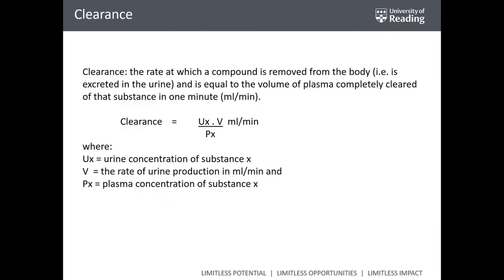Clearance is the rate at which a compound is removed from the body — for example, excreted in the urine. It equals the volume of plasma completely cleared of that substance in one minute. Clearance equals the concentration of that substance in the urine divided by the concentration in the plasma, times the rate of urine production in milliliters per minute.